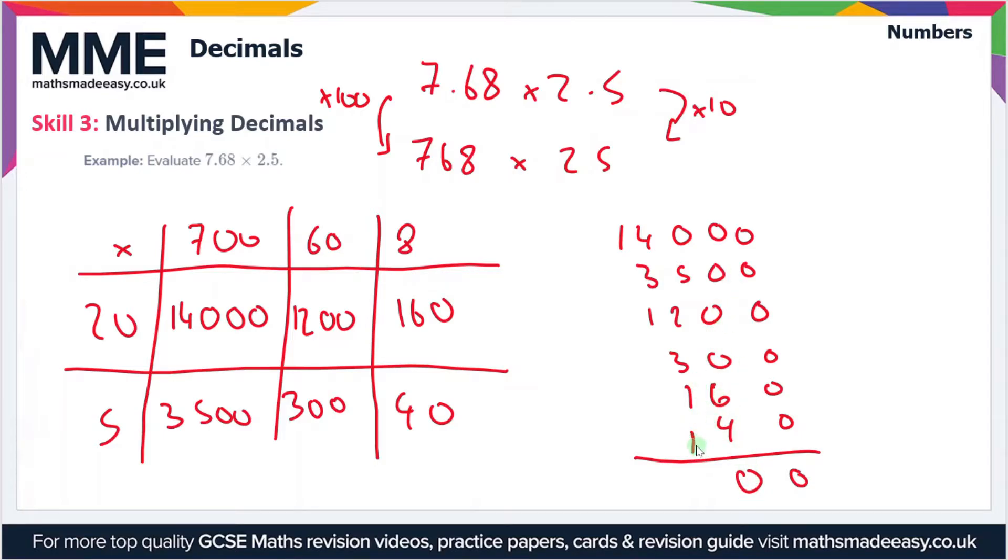So we put a 1 in this column here. 5 add 2 add 3 is 10 plus 1 plus 1 is 12, we'll carry the 1. 4 add 3 is 7, add the 1, add the 1 is 9. And finally add the 1 from this column so we get 19,200.